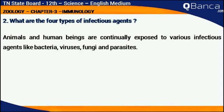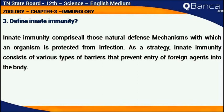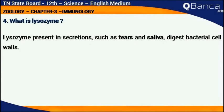Animals and human beings are continually exposed to various infectious agents like bacteria, virus, fungi, and parasites. Define innate immunity. Innate immunity comprises all those natural defense mechanisms with which an organism is protected from infection. As a strategy, innate immunity consists of various types of barriers that prevent entry of foreign agents into the body.